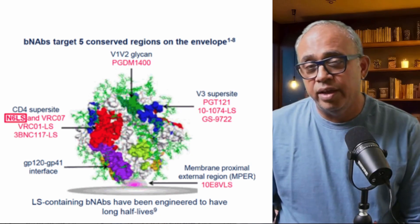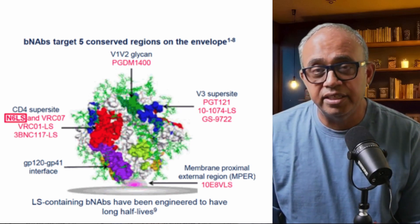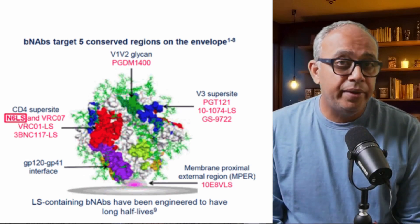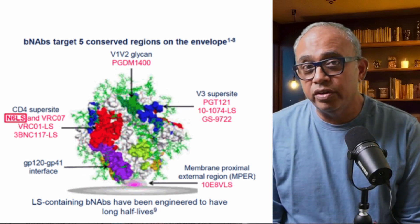MPER is crucial for the fusion process between the viral envelope and the host cell membrane. This fusion allows the viral RNA to enter the host cell and initiate infection. MPER interacts with the host cell membrane and other parts of GP41 to bring the viral and cellular membranes into close proximity, facilitating their merger. MPER is part of the GP41 protein, which undergoes significant conformational changes during the fusion process, essential for the virus to successfully fuse with the host cell membrane.